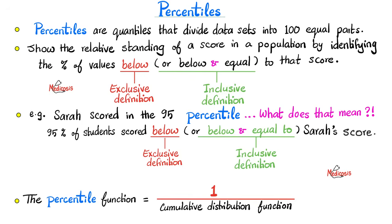Why do we care? Because percentiles show the relative standing of a score in a population by identifying the percent of values below that score, or below and equal to that score. Here is a real-life example: Sarah scored in the 95th percentile. It means that 95% of students scored below Sarah's score, or below and equal to Sarah's score. The former is called the exclusive definition of percentiles, whereas the latter is the inclusive definition of percentiles.